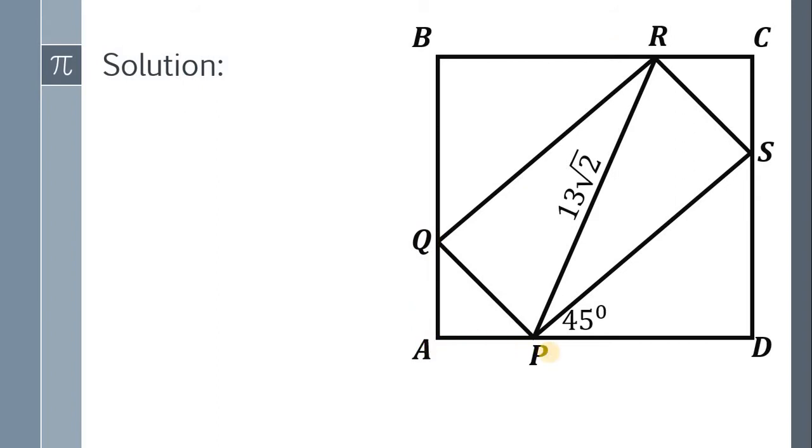Now let AQ be equal to X. It follows that AP is also X. Now recall that the side of this square is equal to 17 cm. Since the whole thing is 17 and we have X, BQ equals 17 minus X. Also, BR equals 17 minus X.